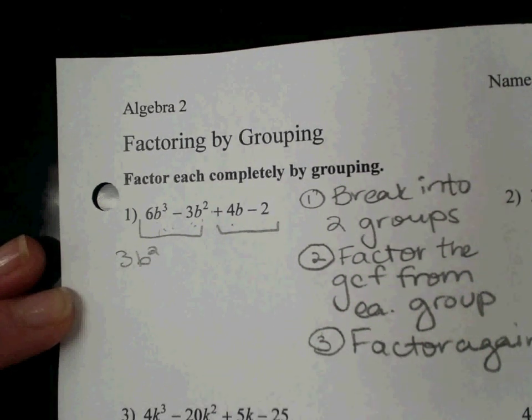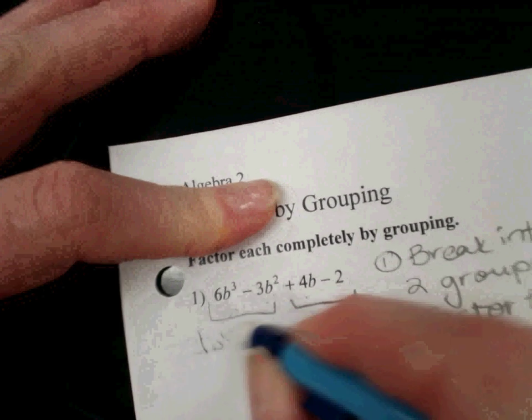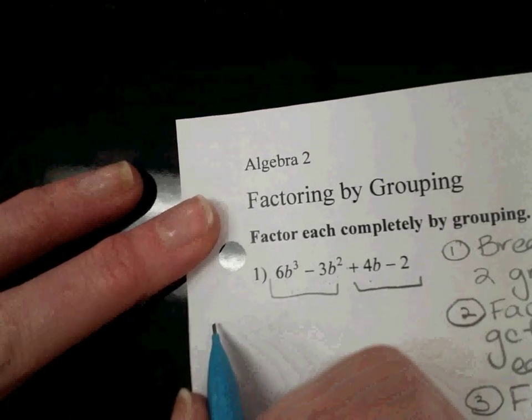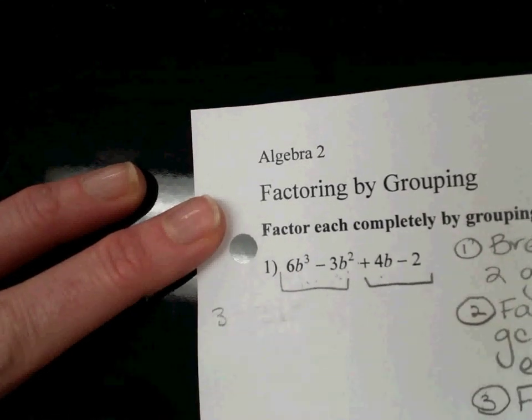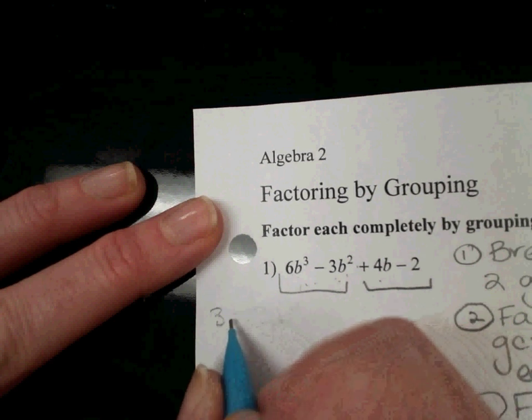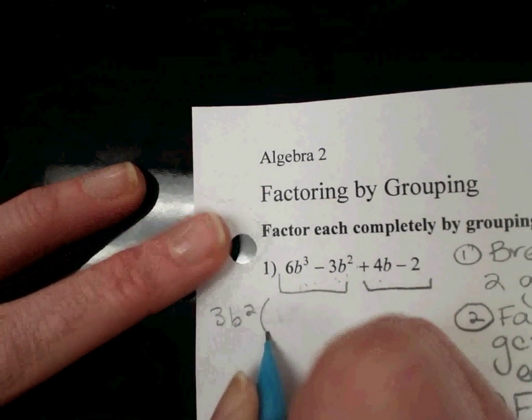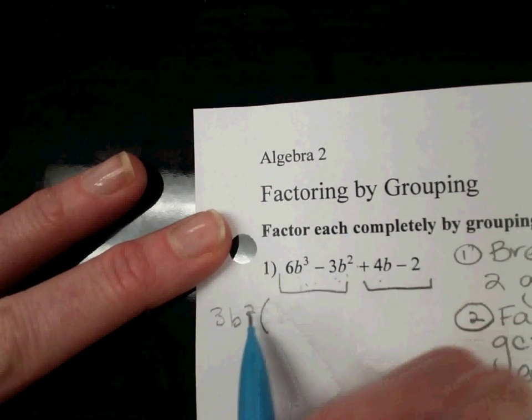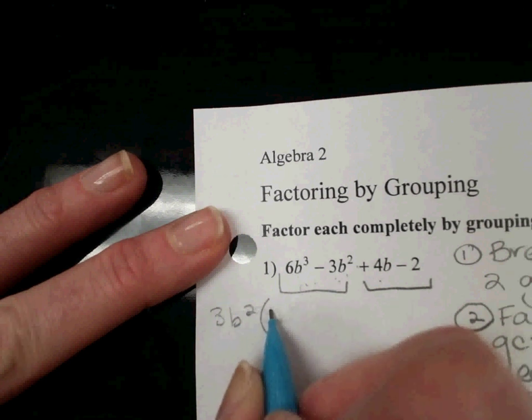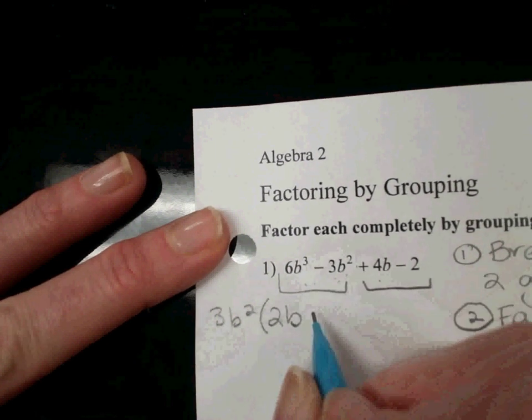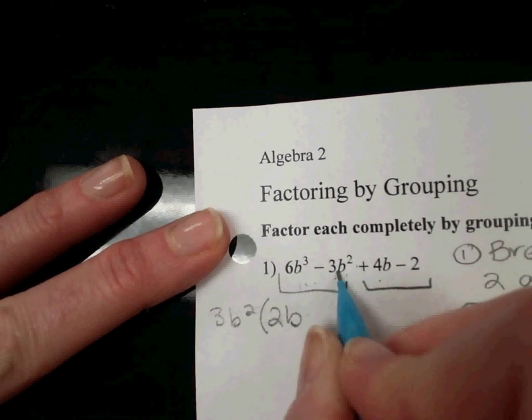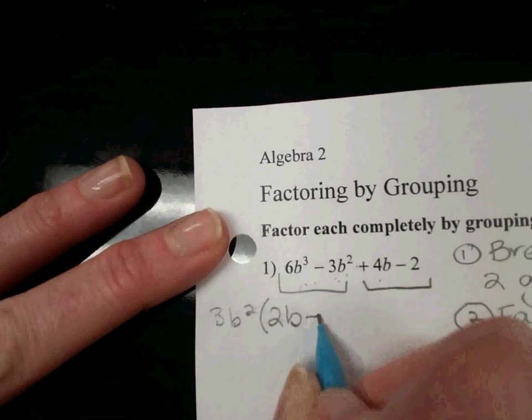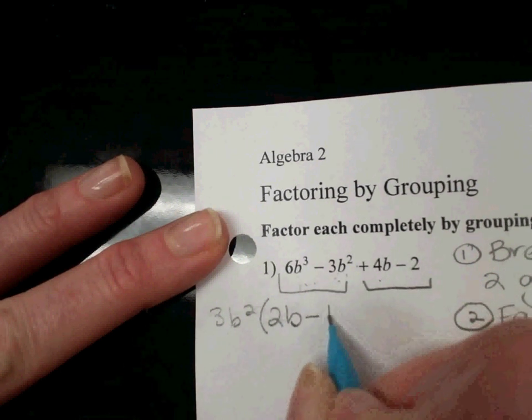3b². I'm going to run out of room, I'm going to start all the way over to the left. So 3b². When I divide 6b³ by 3b², I'm left with 2b. And then 3b² divided by 3b², don't forget the minus sign here, that's just 1, minus 1.